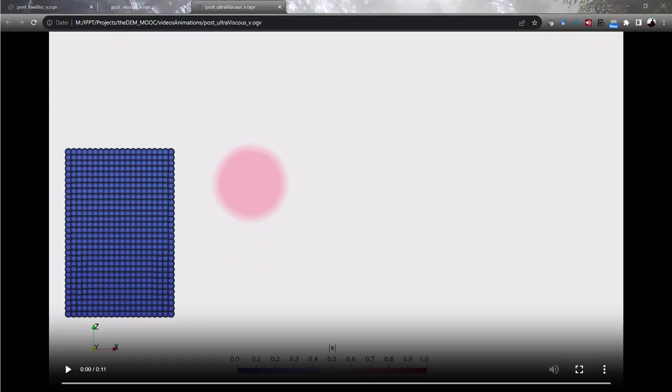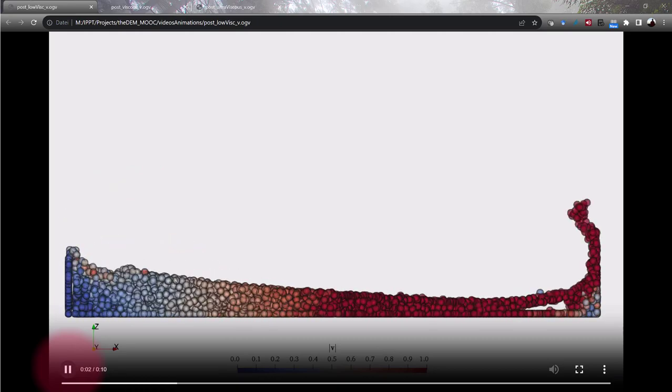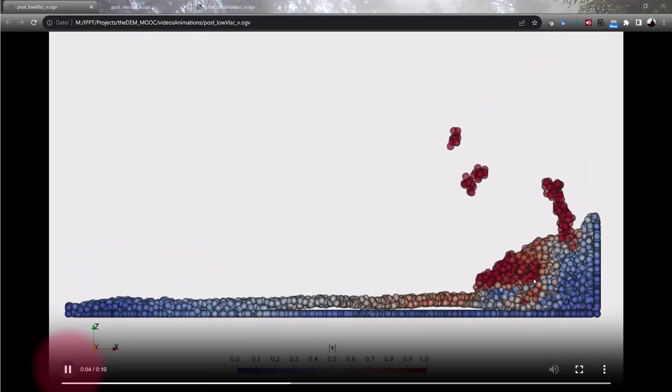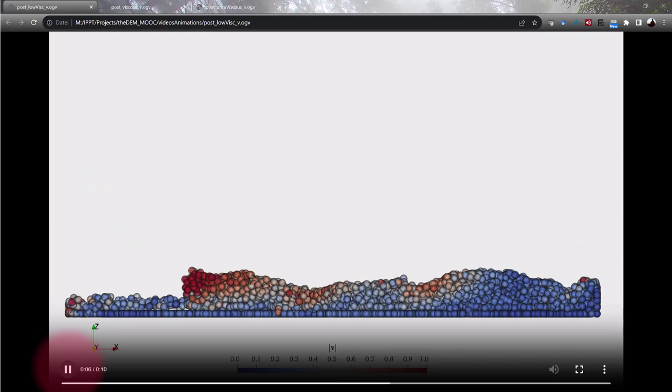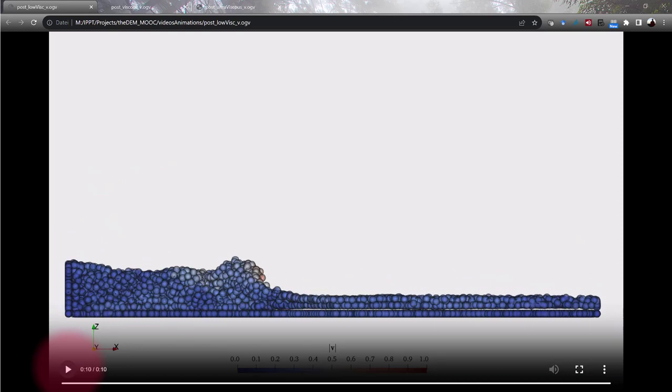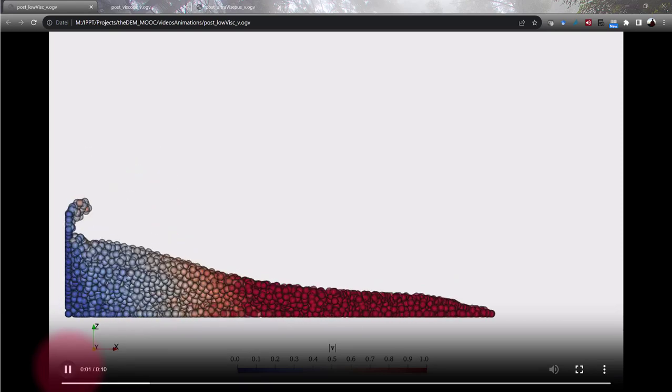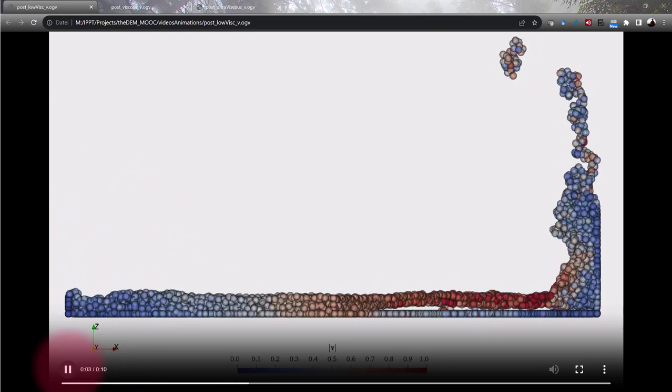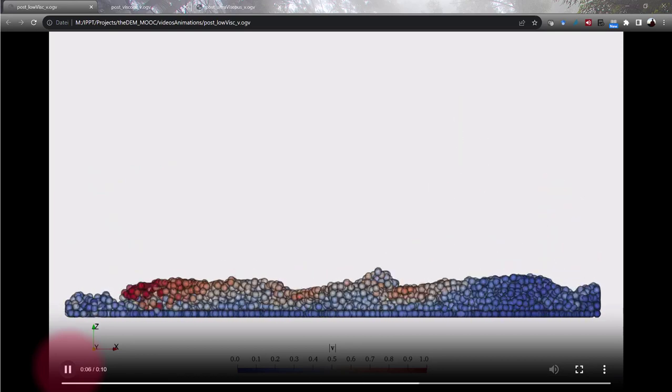What I would like to show you now is how such an SPH type of simulation looks like. Here you see this dam break example, which is an archetypal example of such an SPH type. First let us look at the situation at low viscosity. You see here the fluid is splashing at the other corner of the box and flowing back and forth, as you would expect for a low viscosity fluid. You see here these nice waves as they propagate. And this is important for coastal engineering, as you might imagine.